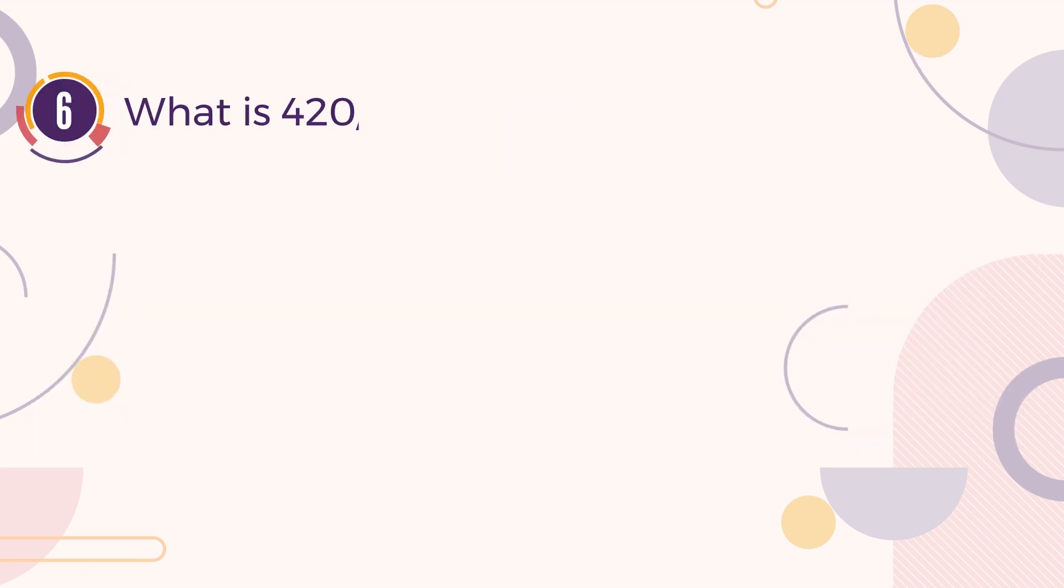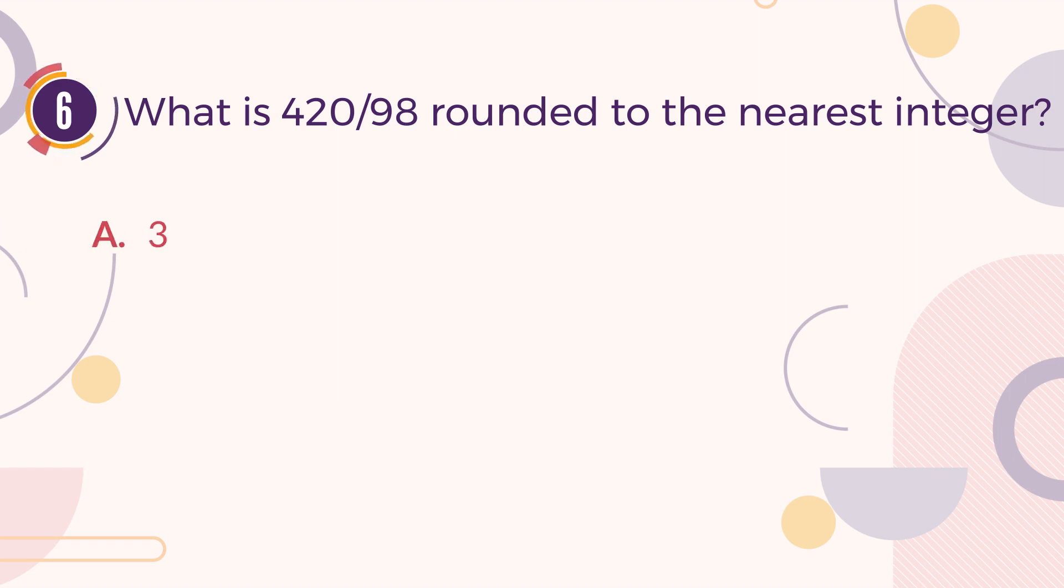Number 6. What is 420 divided by 98 rounded to the nearest integer? A. 3. B. 4. C. 5. D. 6.